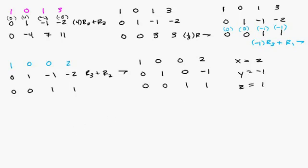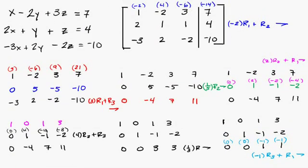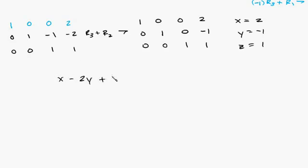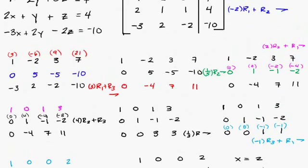We can go ahead and check it by plugging into one of the equations. Let's go back up and look at what we have — the first equation: x minus 2y plus 3z. So let's do that in green to check. x minus 2y plus 3z is equal to 7. If x equals 2, then 2 minus 2 times negative 1 plus 3 times 1 equals 7. So 2 plus 2 plus 3 equals 7 — that's 4 plus 3 equals 7. You can go ahead and plug in the same numbers to check the other equations, but usually if you check one, they're all going to work out.